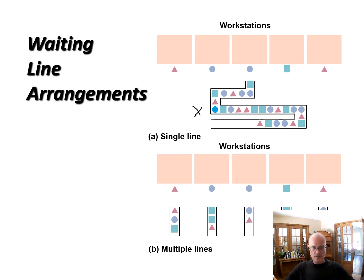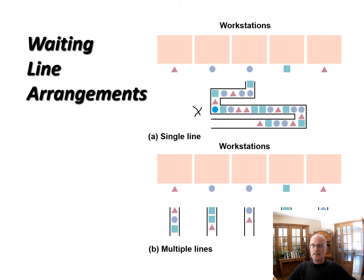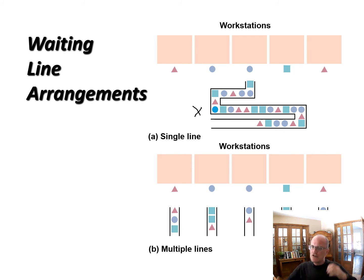We use multiple individual lines because it's sometimes a space requirement — a single line often requires more space. Multiple individual lines can also change the perception. If you see a single long queue it can be discouraging even if your expected waiting time is low. And in the grocery store, the highest-margin items are usually at the cashier, so they don't mind if you wait a little and pick up gum, a chocolate bar, or a magazine. All of those considerations factor into how we manage lines.